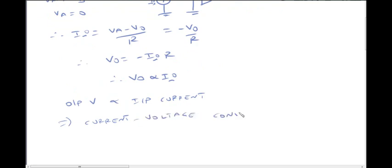That's why it's called current to voltage converter. By changing the input current, we can change the output voltage. That's why it can be used as a current to voltage converter. This is also called CCVS, current controlled voltage source. Current is controlled and voltage is controlled proportionally.